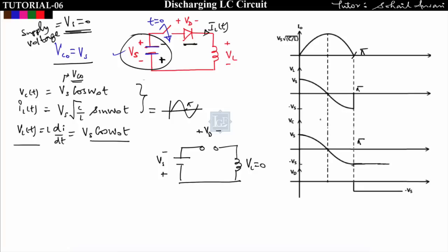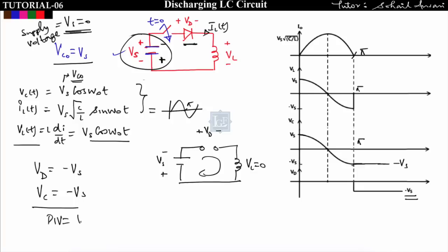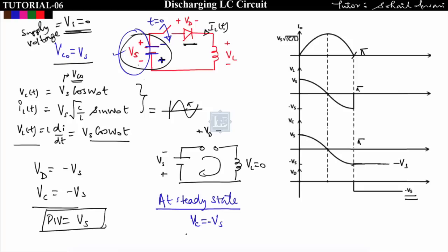After π, vL = 0 (current = 0). Applying KVL: vd + Vs = 0 (with supply = 0), so vd = -Vs. The voltage across the capacitor after π is -Vs. Key points for discharging diode-LC circuit: at steady state, vc = -Vs, and peak inverse voltage = Vs.